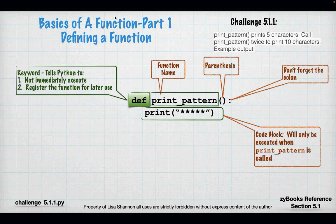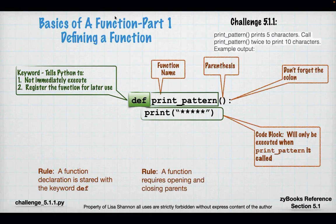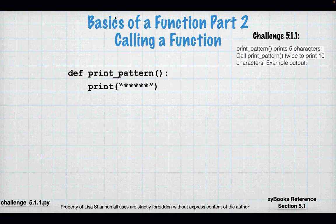This is a very simple function. We're going to define more complex functions. Rule number one: a function declaration is started with the keyword def. When you see def print_pattern and all that, this is a function declaration. You're not running it, you're declaring it. A function requires at minimum an open and closing parentheses. I've defined my function, but that's all I've done. It's not going to be run.